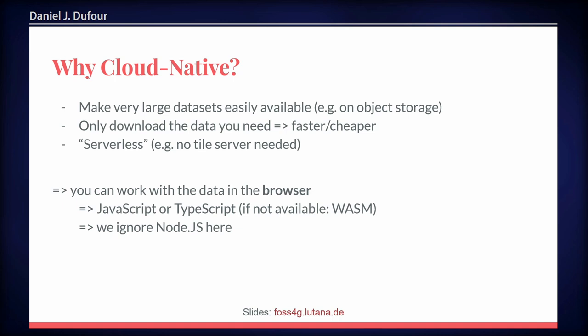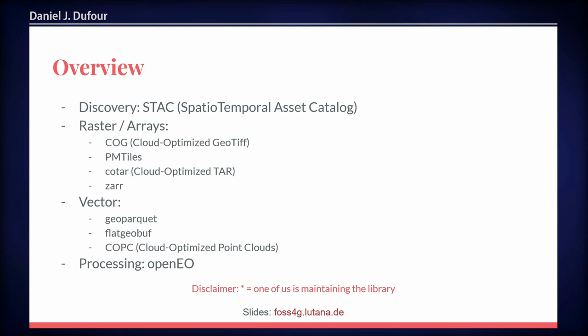We are focusing on JavaScript and TypeScript, and if there's nothing available natively, then we also look into WebAssembly. We ignore Node.js for now because that's server-side. A quick overview of what we are tackling: first, the part of discovery, which we heard before from Pete's STAC talk. Then we have two categories of data: raster or array-based data, which includes COGs (Cloud Optimized GeoTIFFs), PMTiles, cloud-optimized TAR, and Zarr. And for vector data, we have GeoParquet, FlatGeoBuf, and cloud-optimized point clouds. For cloud-native processing, we have OpenEO. Short disclaimer — we're working on a couple of projects mentioned in these slides, and the ones with a star are maintained by us, so we might be biased.